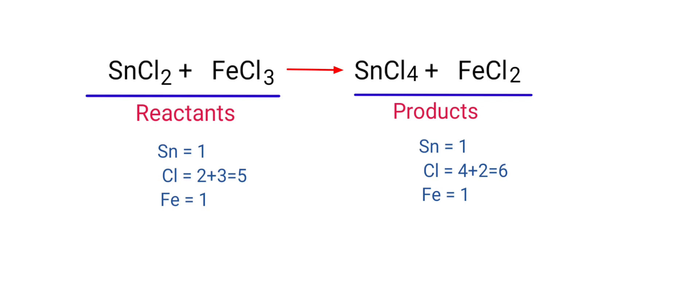If you look at this equation, the equation is not balanced. On the reactants side there is 1 Tin atom, 5 Chlorine atoms, and 1 Iron atom present. On the products side there is 1 Tin atom, 6 Chlorine atoms, and 1 Iron atom present.